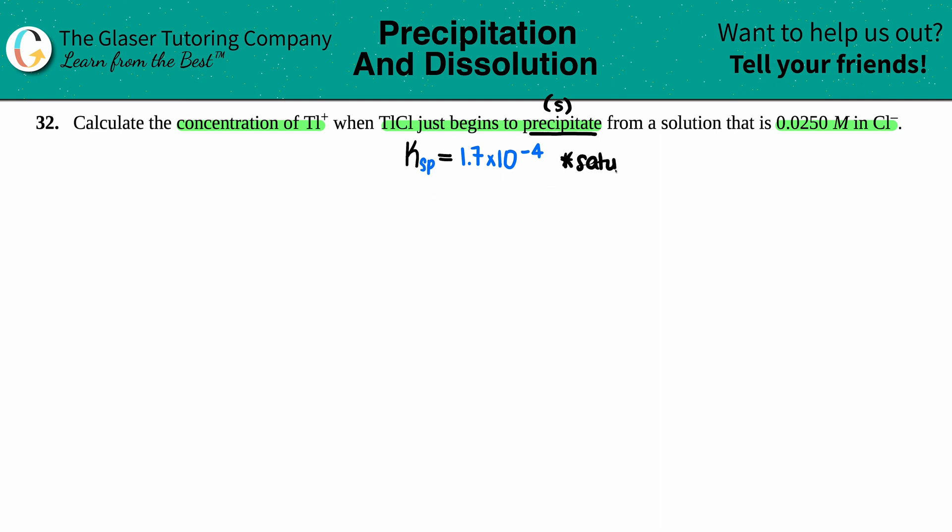So remember, for any Ksp we need the balanced equation. I'm going to take the compound TICl, and that's a solid. It's going to break down into its ions, dissociate with a double arrow.